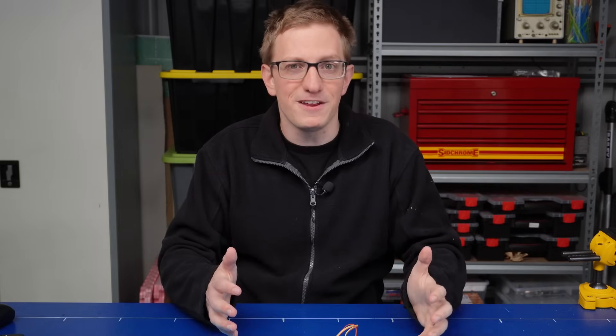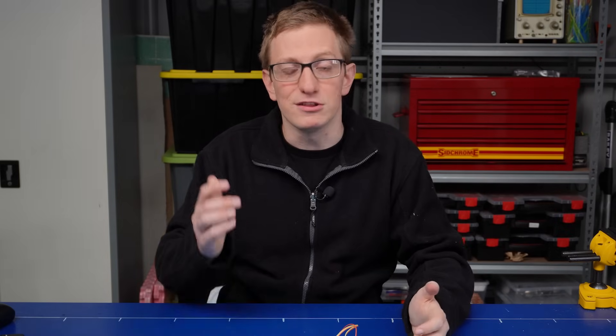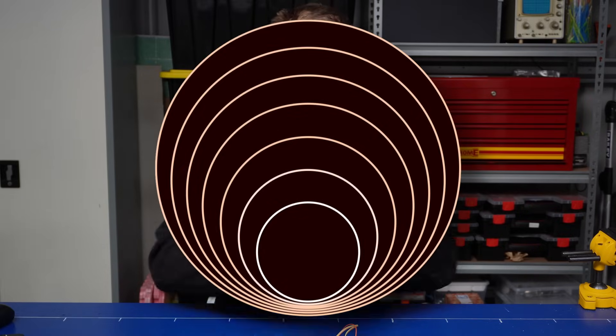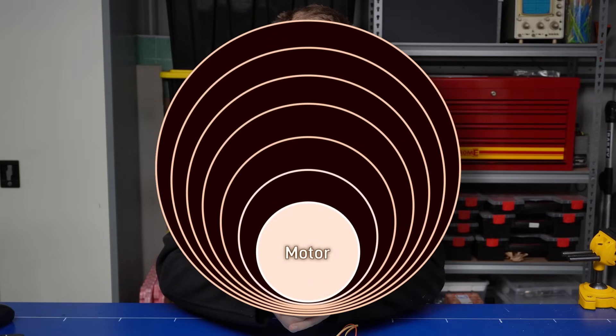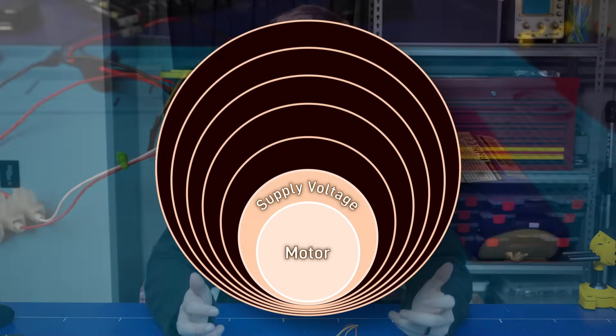Also this isn't a video on what the different motor types are and how they work and how to choose them, but if that's something that you'd like to see a video on down the track, let us know in the comments. So at the center of our onion we've got the motor. Without electricity though, it's not going to do us much good. And the easiest way to make it move, for a brushed DC motor at least, is to apply the appropriate supply voltage. So that's our first layer.